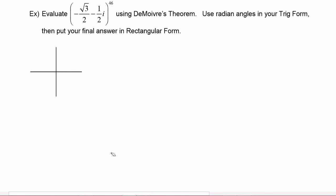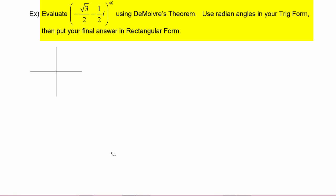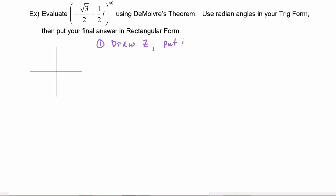In this example, we have to evaluate the quantity negative root three over two minus one-half i, to the forty-sixth power, using de Moivre's theorem. Use radian angles in your trig form, then put your final answer in rectangular form. The first order of business is to draw our complex number z and put it into trig form.